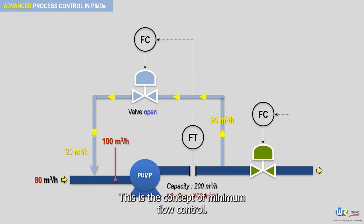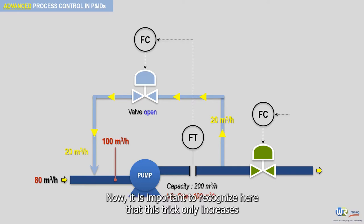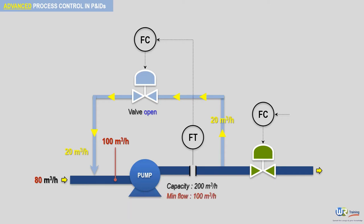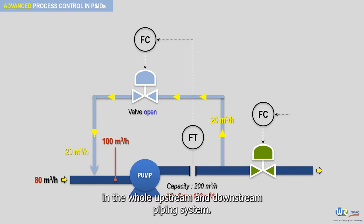This is the concept of minimum flow control. Now it is important to recognize that this trick only increases the flow rate inside the recirculation loop to a number higher than 100 cubic meters per hour to fool the pump. We are not able to increase the overall flow in the whole upstream and downstream piping system.